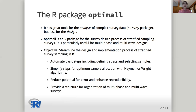The package's objective is to streamline the design and implementation process of stratified survey sampling in R. To accomplish this, OptiMall contains features that automate basic survey steps, including defining strata and selecting samples, simplifies steps for optimum sample allocation with Neyman or Wright allocation algorithms, reduces the potential for error and enhances reproducibility, and provides a structure for organization of multi-phase and multi-wave surveys.